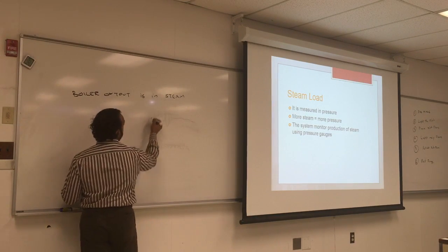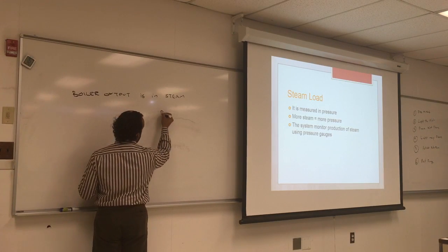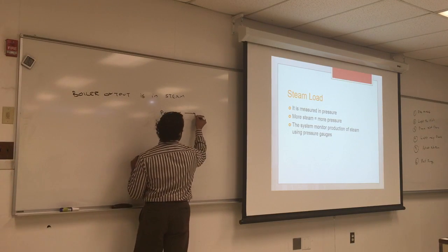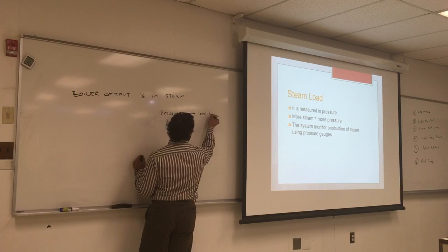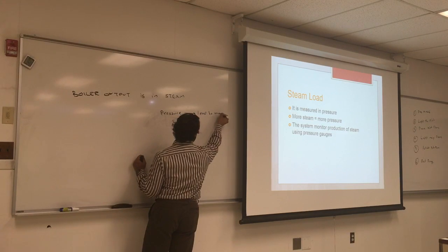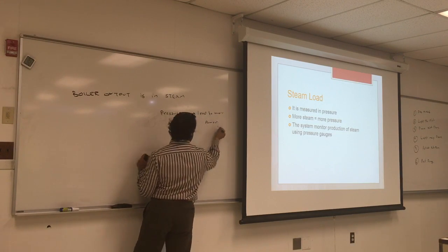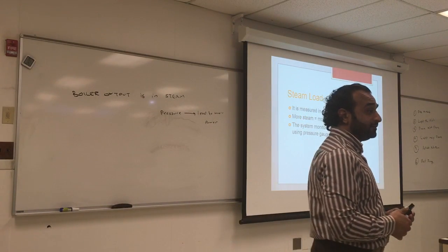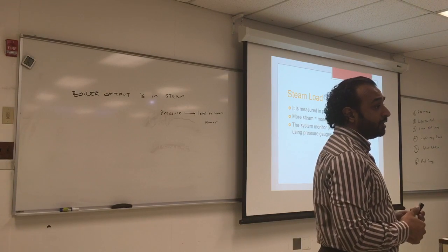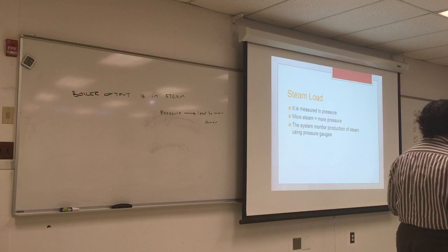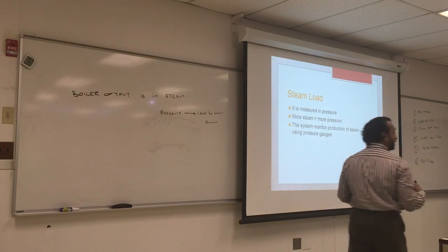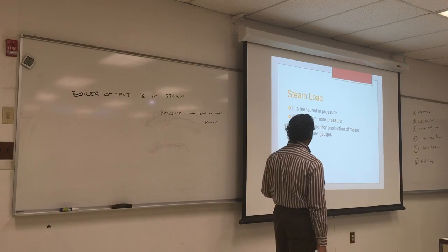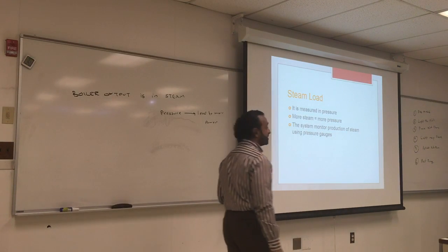It's not quantity, it's not volume, it's pressure. And that pressure leads to more power. It can go up to 5,000 megapascal — that's a lot. You push a train with steam, you push a turbine, so there's usually a lot of power in the steam. More steam, more pressure, also more power. The system monitors the production of steam using pressure gauges, which will monitor the presence and amount of steam at that point.